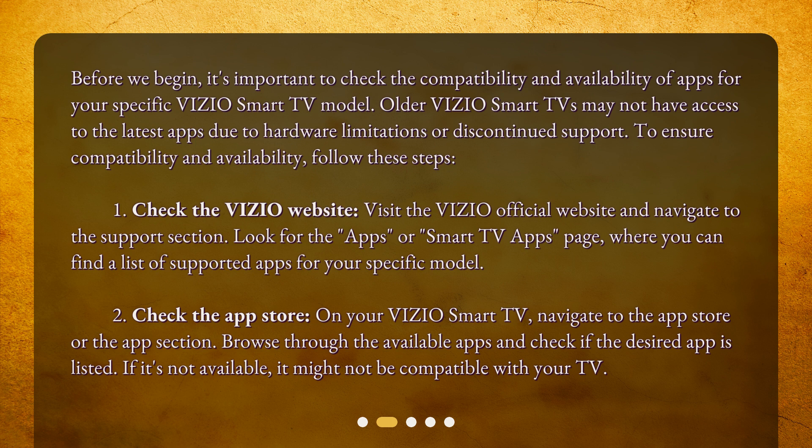First, check the Vizio website. Visit the Vizio official website and navigate to the Support section. Look for the Apps page, where you can find a list of supported apps for your specific model. Second, check the App Store. On your Vizio Smart TV, navigate to the App Store or the App section. Browse through the available apps and check if the desired app is listed. If it's not available, it might not be compatible with your TV.